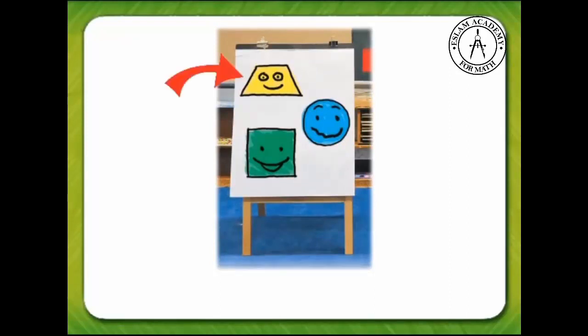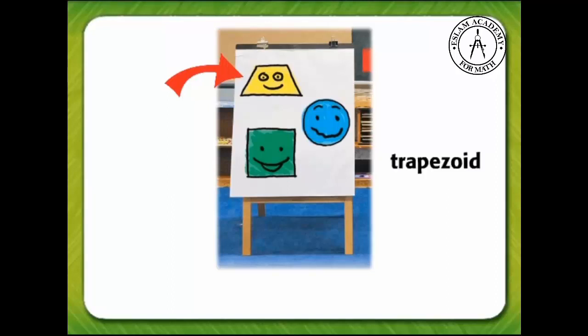What is the name of the yellow shape on the top with the smiley face? It starts with the letter T. It's a trapezoid.